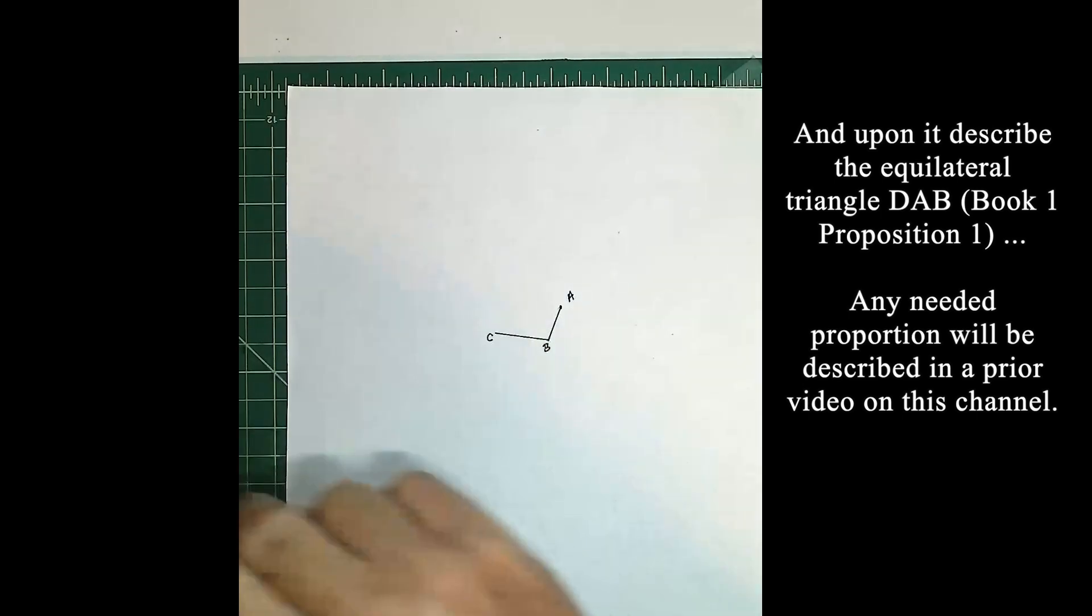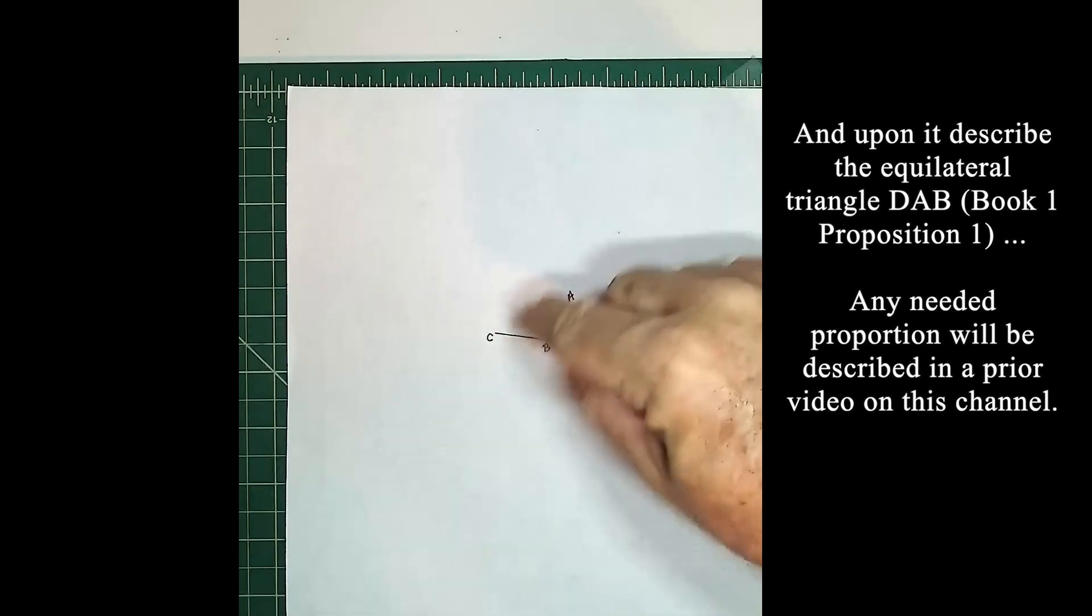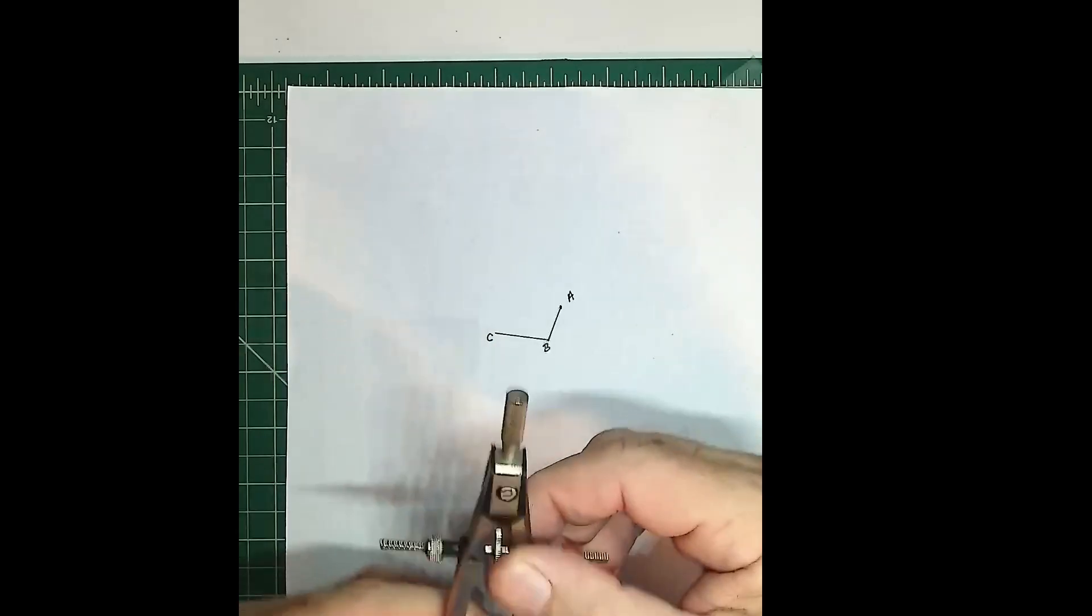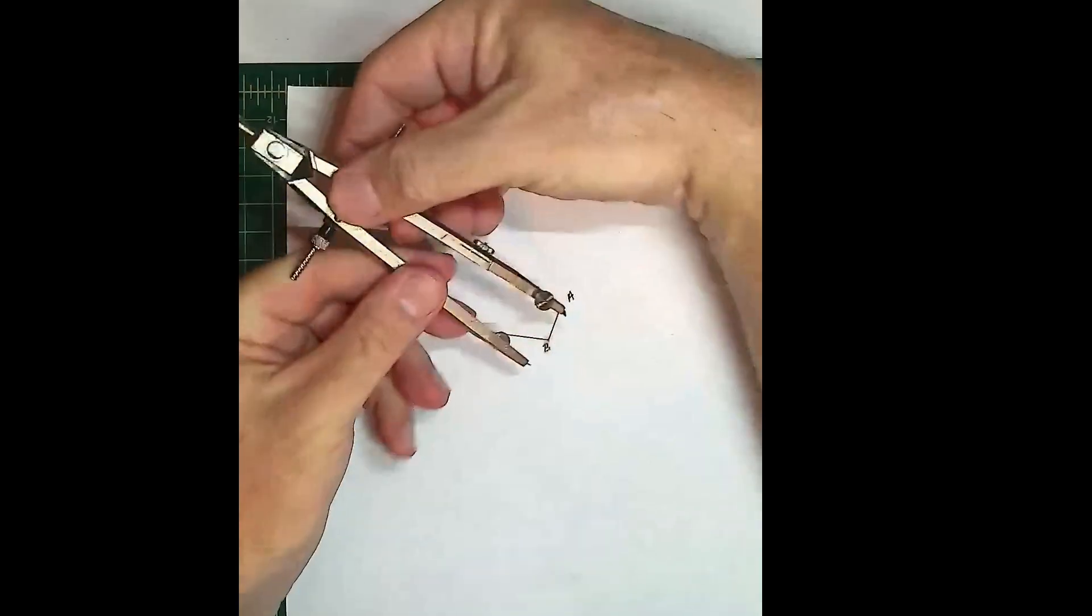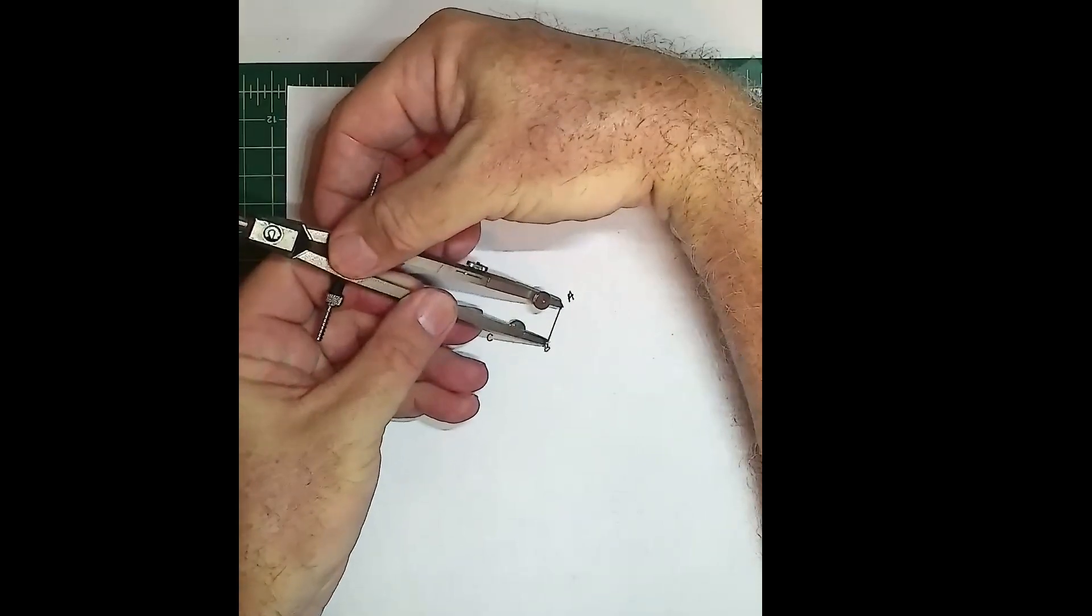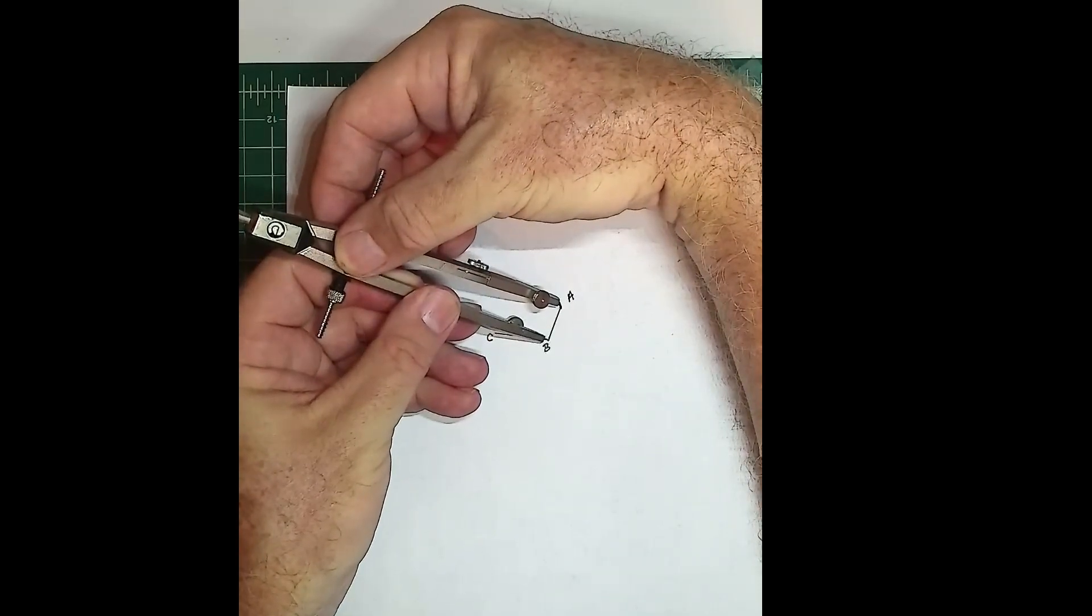We're going to need an equilateral triangle - that is Proposition 1. In Proposition 1 you don't need two complete circles, all you need are two arcs of the same length, two arc segments from a circle.